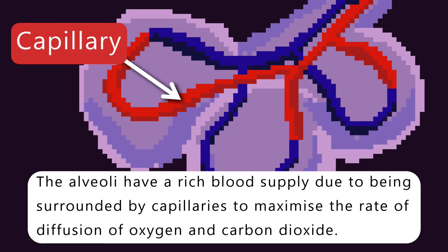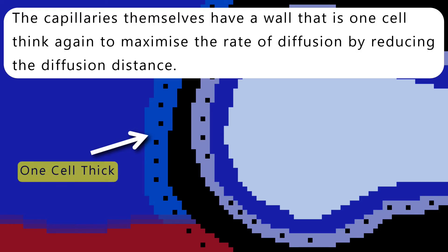The alveoli have a rich blood supply because they are surrounded by capillaries to maximise the rate of diffusion of oxygen and carbon dioxide. The capillaries themselves have a wall that is one cell thick, again to maximise the rate of diffusion by reducing the diffusion distance.